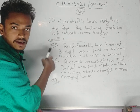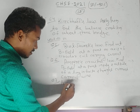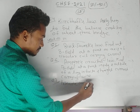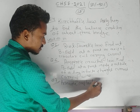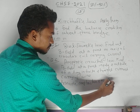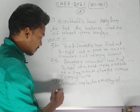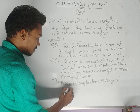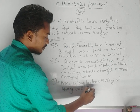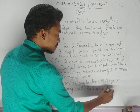Question number seven: write the principle, construction, and working of a moving coil galvanometer. These three questions from magnetic effect of current are very important.